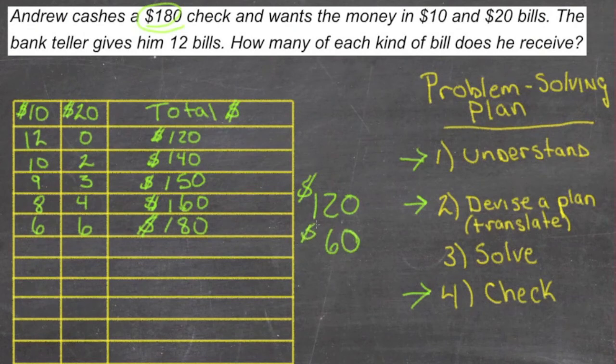Yeah. 60 and 120 is 180. So it checks out. Looks like we got the right answer.